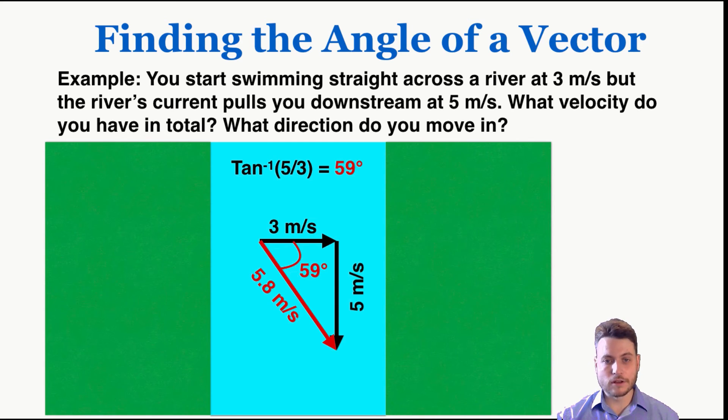So what this is saying is that if you're in a river and you're swimming at 3 meters per second straight across the river, but the river is pushing you 5 meters per second down the river, your actual true velocity will be 5.8 meters per second at an angle of 59 degrees from the real path that you want to take straight across the river.